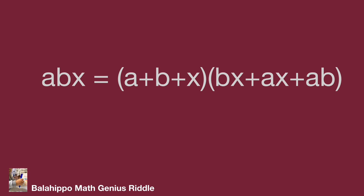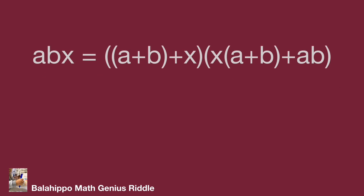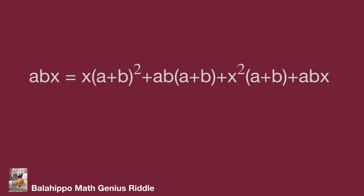So abx equals the quantity (a plus b plus x) multiplied by the quantity (bx plus ax plus ab). Looking at the two quantities on the right side, there is a common factor of (a plus b). We can factor out (a plus b) for easier operation, adjusting the expression as abx equals bracket (a plus b) bracket times bracket (a plus b) plus ab bracket.